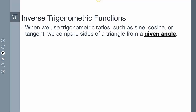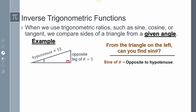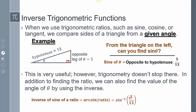When we use these trig ratios such as sine, cosine, or tangent, we're comparing the sides of a triangle from a given angle. For this example, if this is theta and I want to compare my two given sides, I can compare opposite to the hypotenuse, which is 5 over 13. We can take this a step further and actually find the value of theta using the inverse — the arc sine, or sine inverse of 5 over 13.